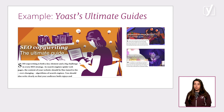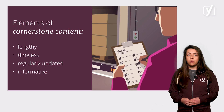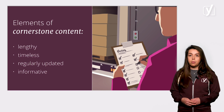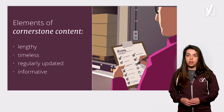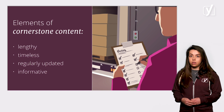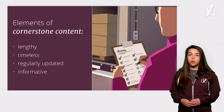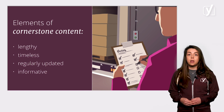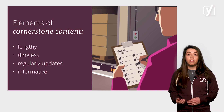You should write cornerstone articles about the keywords you definitely want to rank for. In general, cornerstone articles should be lengthy, timeless, and very regularly updated. Cornerstone articles should definitely be informative articles where you explain something to your audience. You want them to understand more about the topic or you want them to use the information by putting theory to practice.